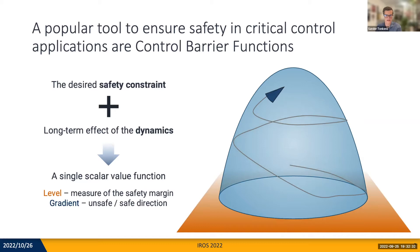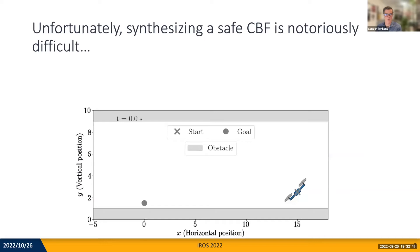Additionally, the derivative along the flow of the dynamics indicates which direction increases or decreases safety. A key reason that CBFs are popular is that they make safety enforcement very computationally efficient and principled, while still allowing systems to approach the boundary of the safe set. While CBFs are easy to deploy, synthesizing a safe CBF is very challenging.